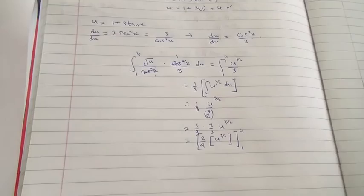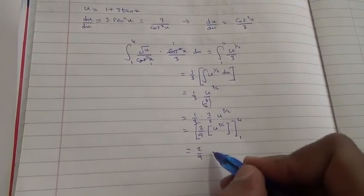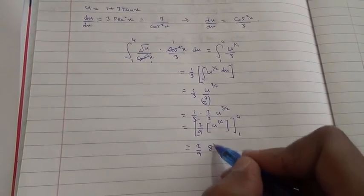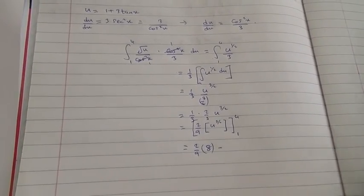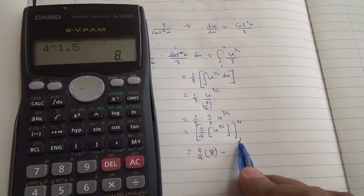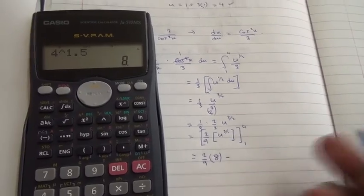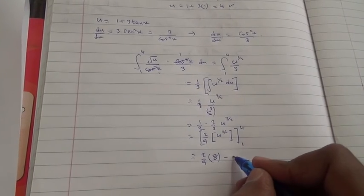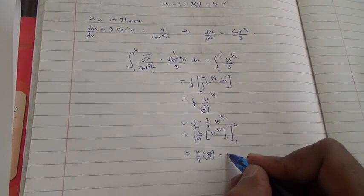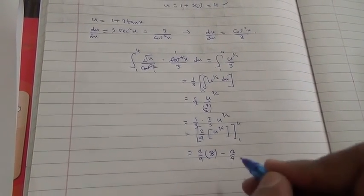Okay, so we have, then, 2 over 9, times 8, minus, what is 1 to the power of 3 over 2? 1 to the power of 3 over 2 is 1 itself. So, 1 times 2 over 9 is 2 over 9. So, 1 times 2 is 2 over 9. And basically, what do we have? 2 times 8 is 16.